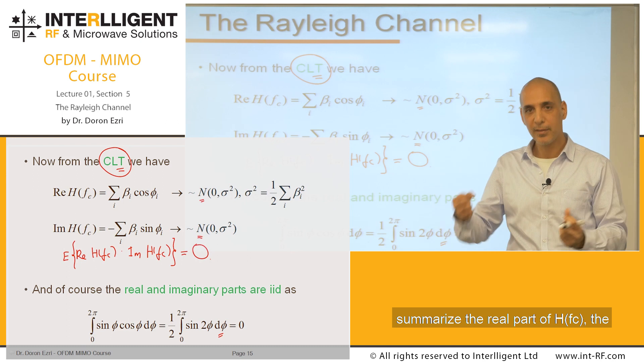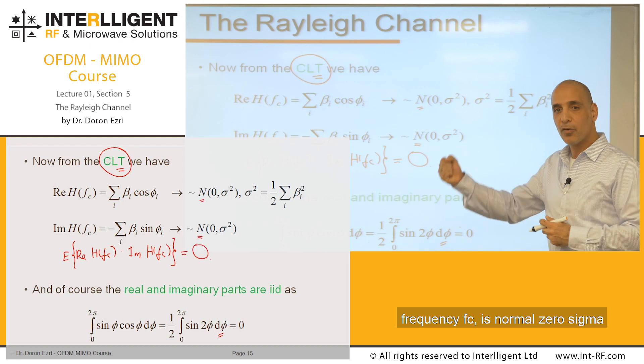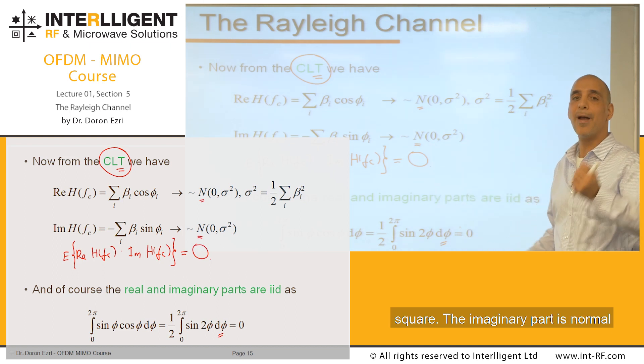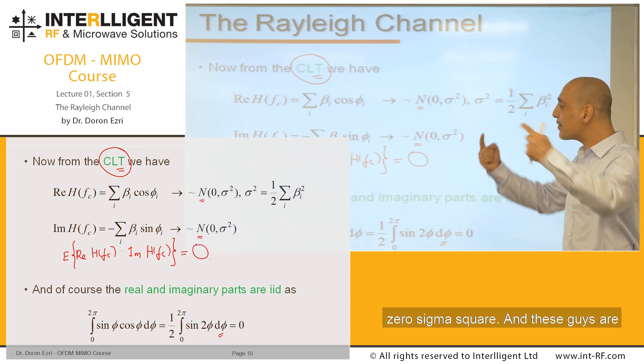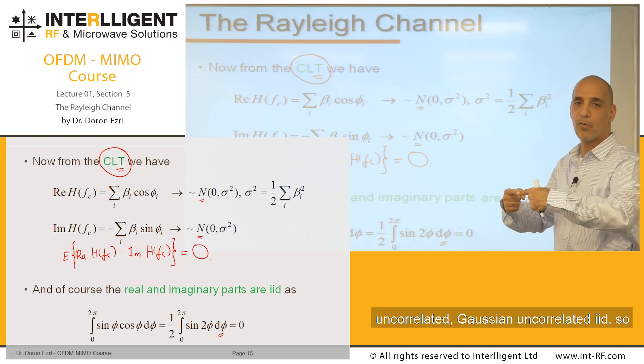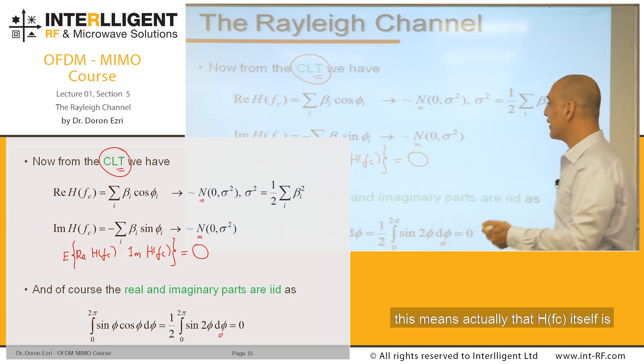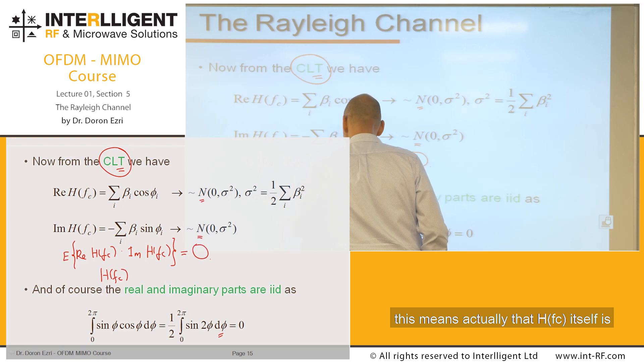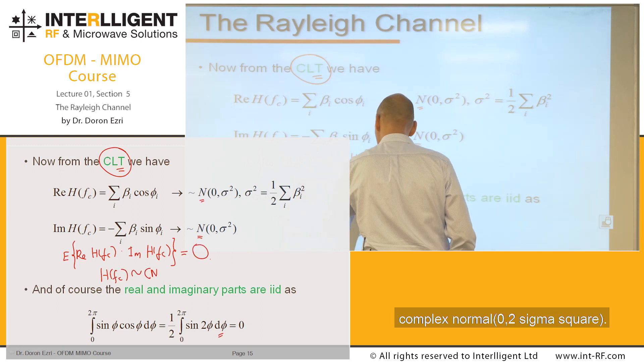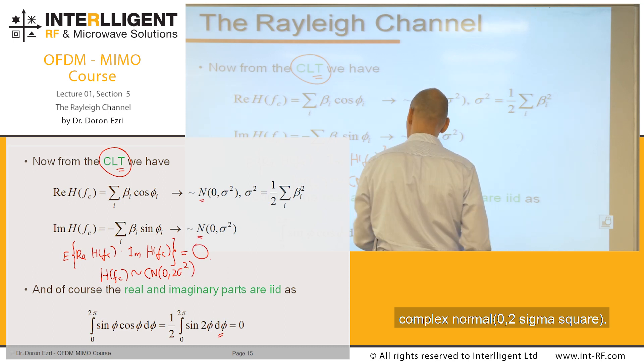So to summarize, the real part of H(fc) is normal (0, sigma^2). The imaginary part is normal (0, sigma^2). And these guys are uncorrelated. So Gaussian, uncorrelated means iid. So this means that H(fc) itself is complex normal (0, 2*sigma^2).